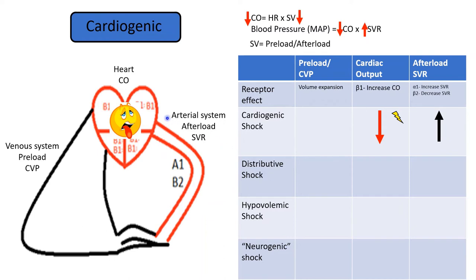'Wet versus dry' refers to the preload — how much fluid is on the lungs. Because the heart is the driving force emptying the venous system, impaired cardiac output causes preload to increase. This is why in heart failure and cardiogenic shock you see jugular venous distension and often pulmonary edema.